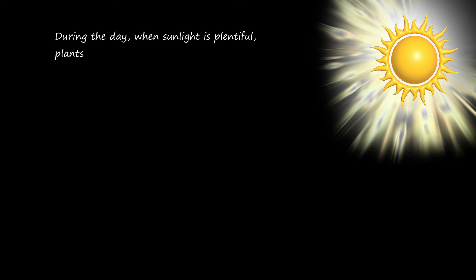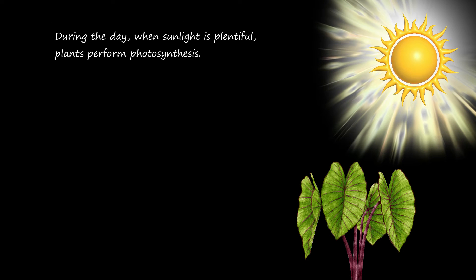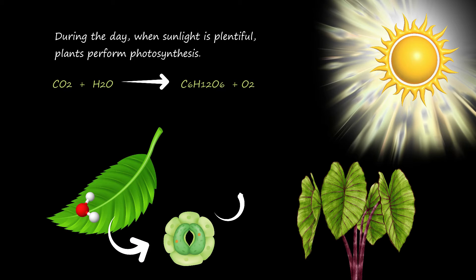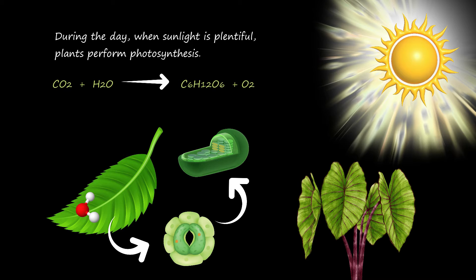During the day, when sunlight is plentiful, plants perform photosynthesis — a process where they convert carbon dioxide and water into glucose and oxygen using energy from the sun. Carbon dioxide enters the leaf through the stomata and diffuses into the chloroplasts, where it's used in photosynthesis. Meanwhile, oxygen, the byproduct of photosynthesis, exits the leaf through the same stomata.